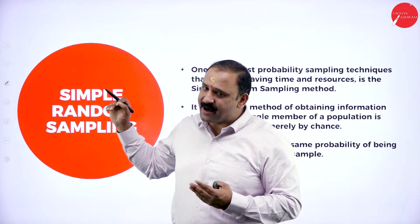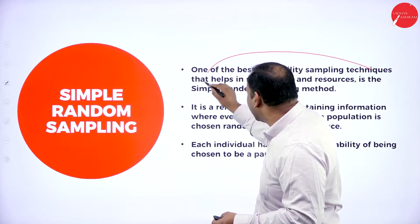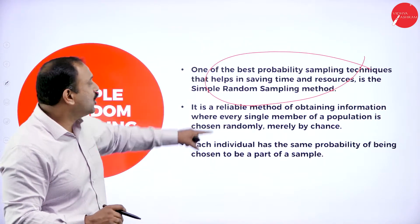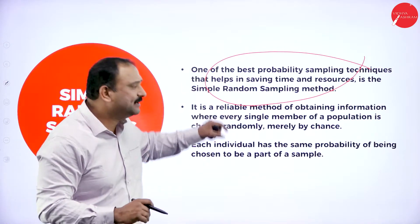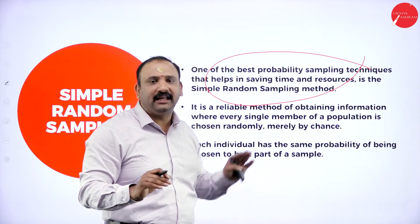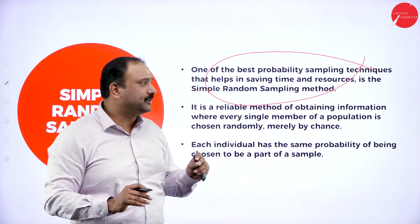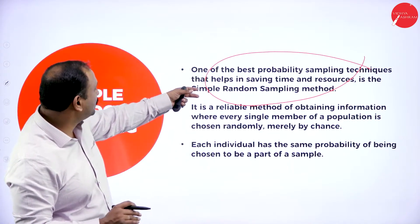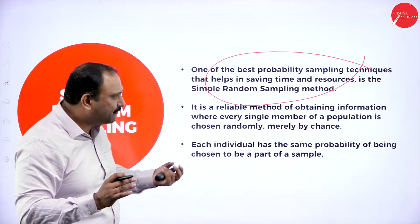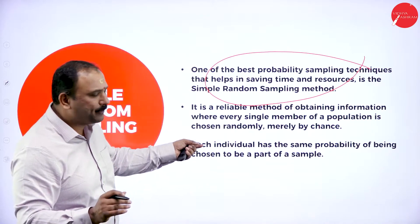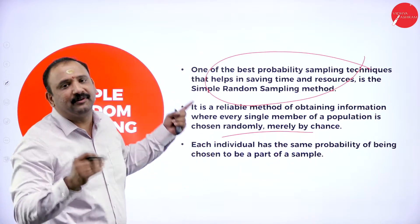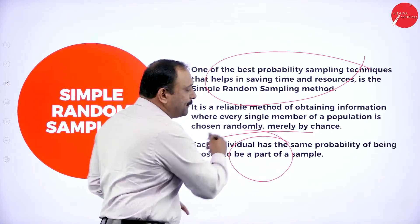One of the best probability sampling techniques that helps in saving time and resources is simple random sampling. It is a reliable method of obtaining information where every single member of the population is chosen randomly and not merely by chance. Every individual member will have the same probability — an equal chance — to be part of the sample.